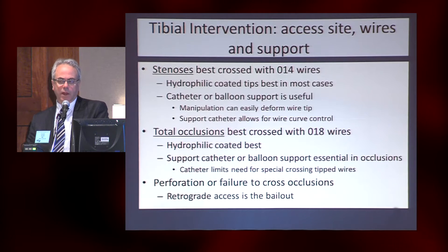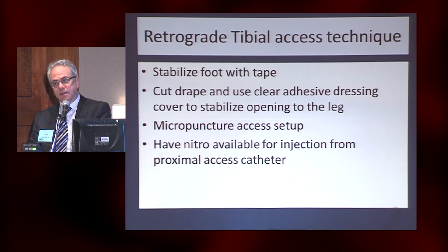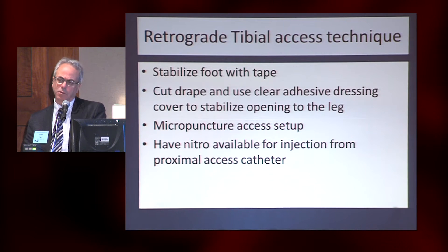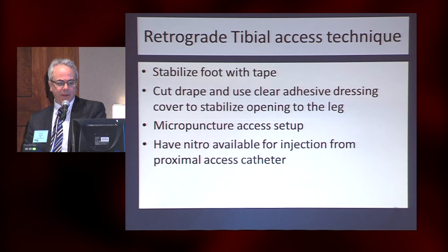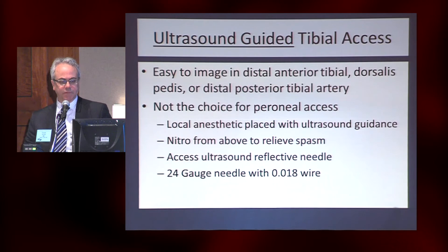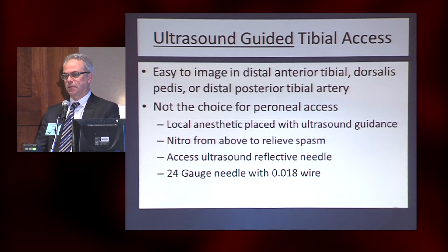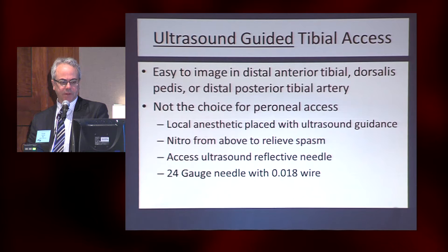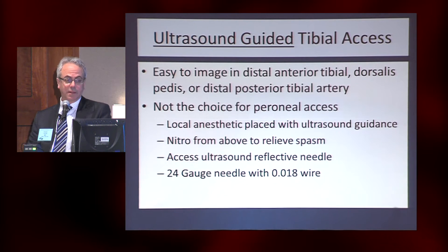If you have trouble — you can tell the wire is looped in a deep plane, you're not going to get into a true lumen distally, or you just hit calcium and can't get across — retrograde access is a good bailout. To do that, you need to stabilize the foot under the drape. I usually cut a hole in it, prep it, and put adhesive dressing across it so you can see it. Micropuncture setup and have nitro to inject from above. Ultrasound-guided access is preferable for most pedal, distal posterior tibial, and anterior tibial access.